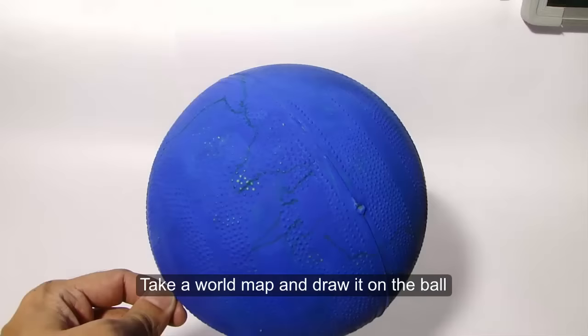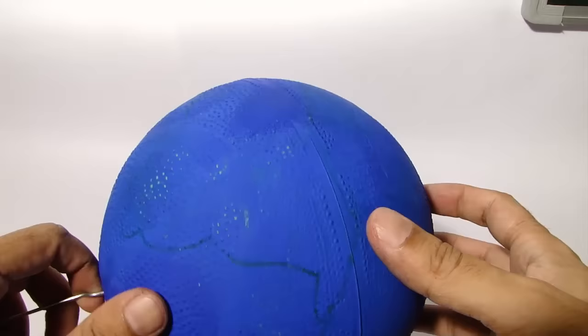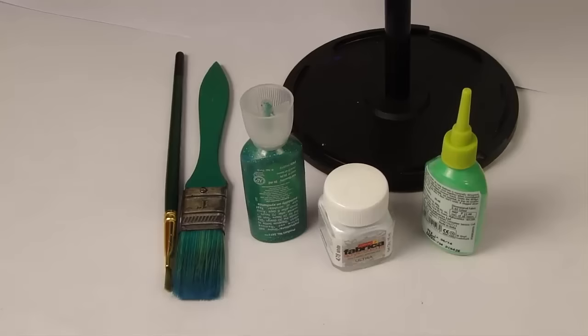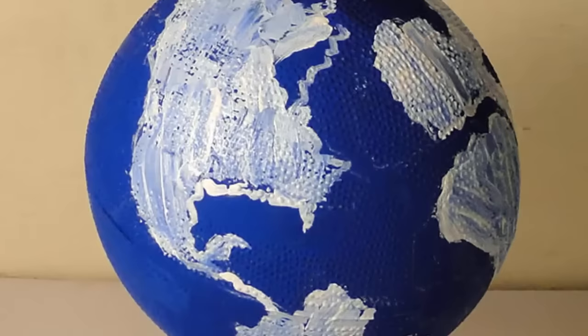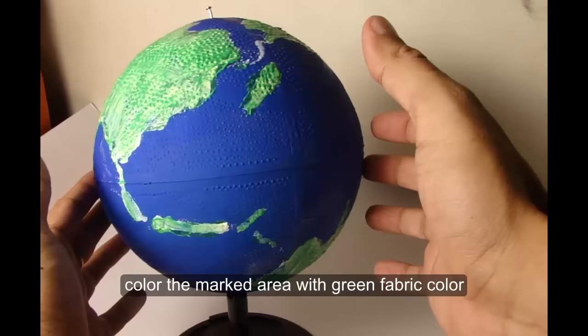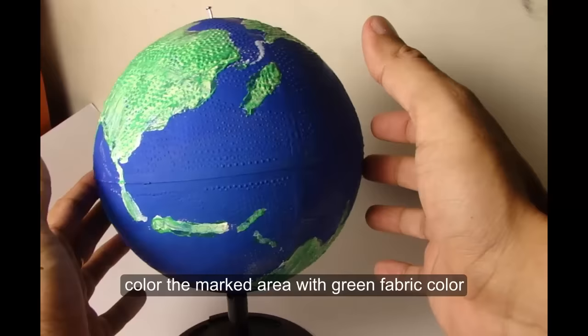Now take a map and mark the ball with a marking pen. Then color the marked area with white fabric color. After this, color the white area with green fabric color and do some artwork.